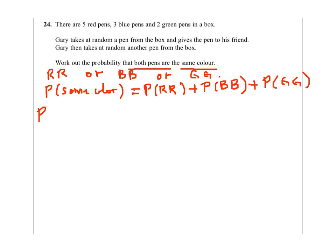What is the probability of getting red and red? There are five red pens, so if Gary picks up a pen the probability of picking up a red pen will be 5 over 10. He gives it to his friend, and his friend picks another pen at random from the box, so it will be 4 over 9 — only four red left out of nine, since he doesn't put it back.